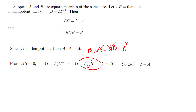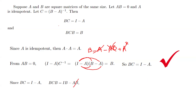Some students on the exam ask about whether A is invertible — we don't use that. Now, since BC equals I minus A, multiply both sides on the right by B: BC times B equals (I minus A) times B equals IB minus AB. Since AB equals zero, that term is zero, so we get IB, which is B. Therefore BCB equals B.